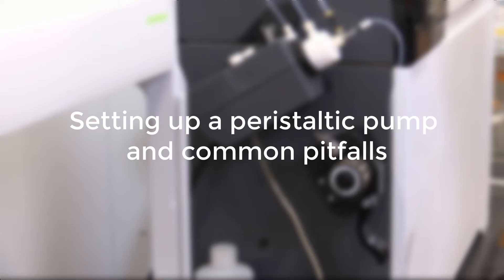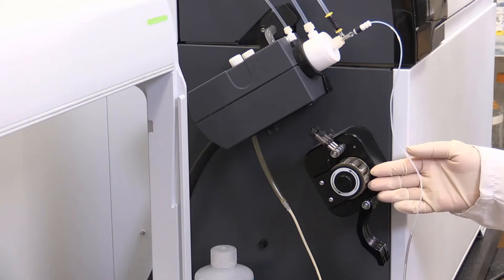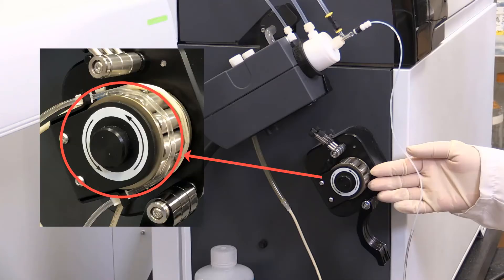Here is the setup and common pitfalls. Most peristaltic pumps will have arrows indicating the direction of the tubing. In this case, tubing should be clamped counter-clockwise.